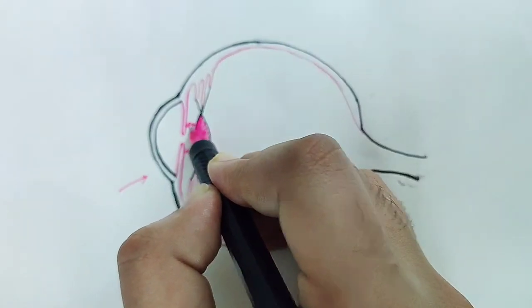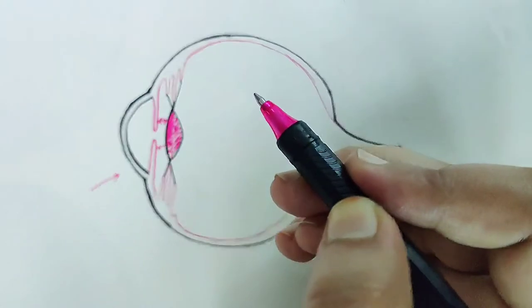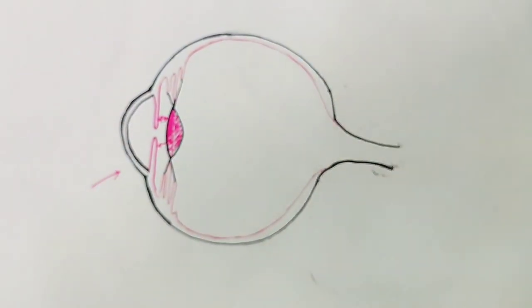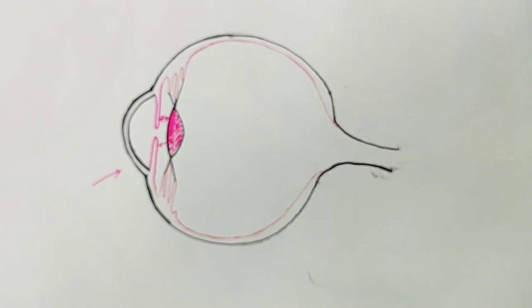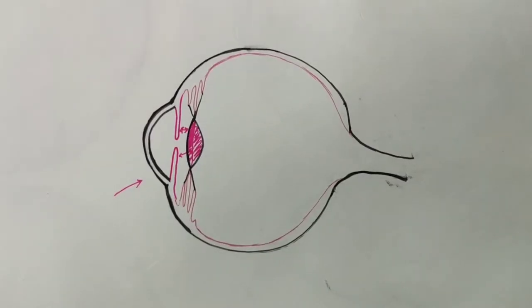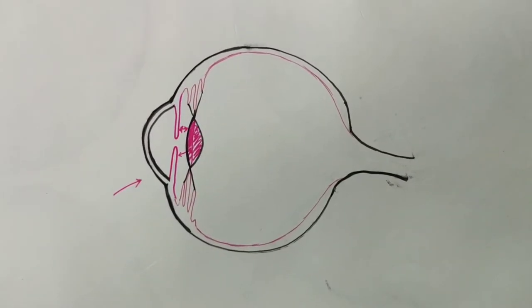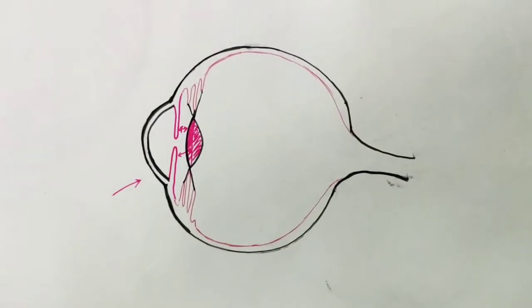But in the case of mature cataract, where the lens is fully opacified, the distance is very negligible and we cannot appreciate the iris shadow seen through the pupil.